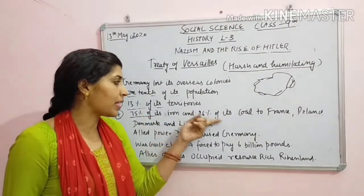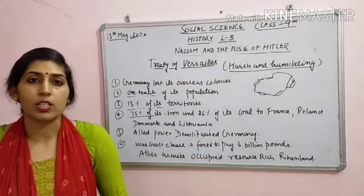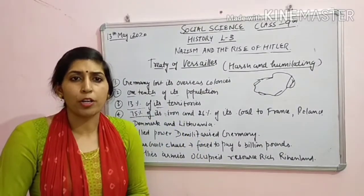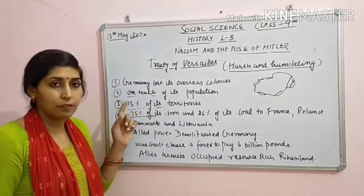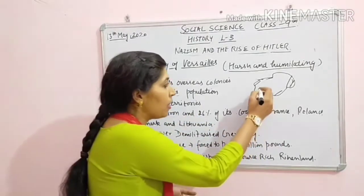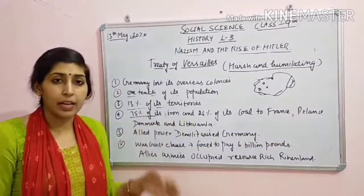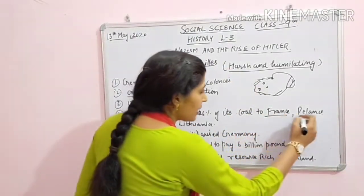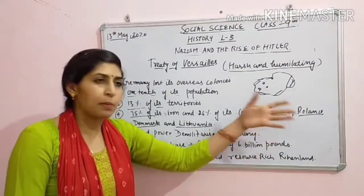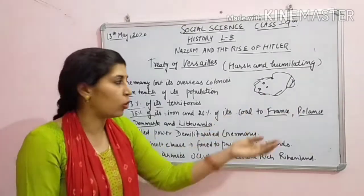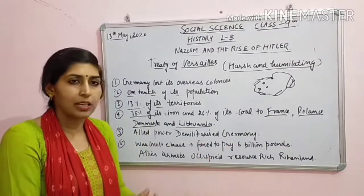75% of its iron and 26% of its coal deposit - kis bhi country ki economic development karne ke liye jo minerals jaisi coal ya iron deposit bohut zyada important hote hain. Toh Germany ko weak banane ke liye inhone Germany ka 75% iron johaan par milta tha woh area, aur 26% coal woh area - France, Poland, Lithuania and Denmark ne aapas mein iron and coal deposit baat liye. Germany ka 75% aur 26% area chahle gaya. Agar neighboring country ko bhi thoda zyada share dhen bhi dho to mere ko hi faayda karegi, nere saath rehegi. Toh France, Poland, Lithuania and Denmark ne aapas mein iron and coal deposits baat liye.